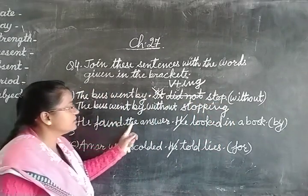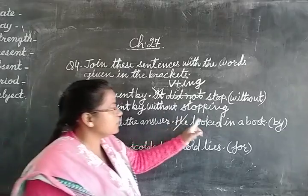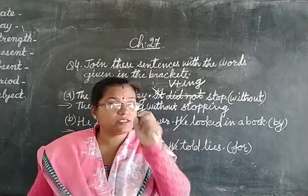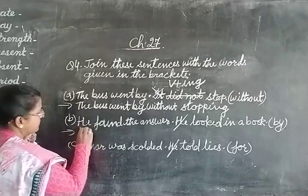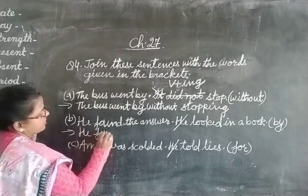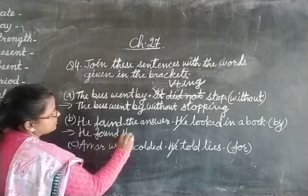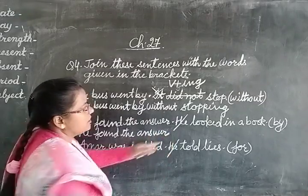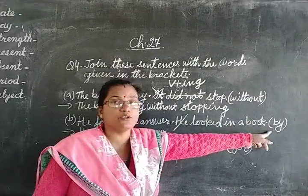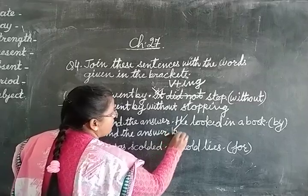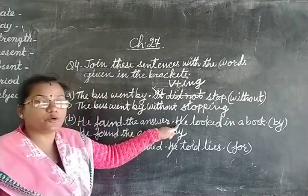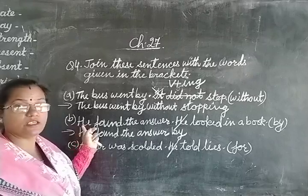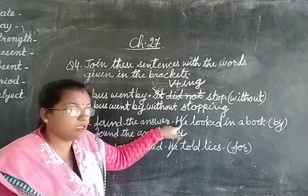Next question. He found the answer. He looked in a book. And we have to use 'by.' First, we write the first sentence: 'He found the answer.' Instead of the second part, we use 'by.' Here we remove the pronoun 'he' because we were already talking about the same person.